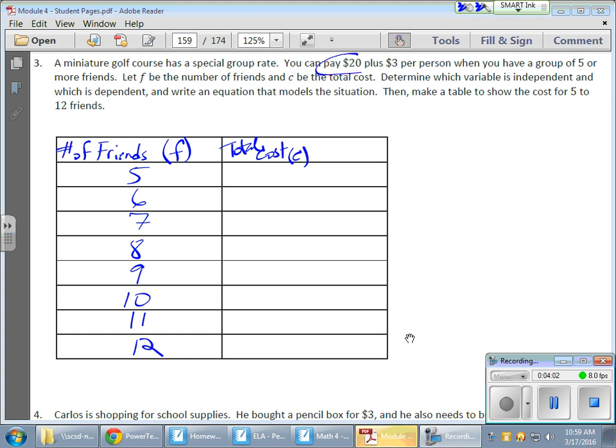I need a formula here, and my formula will be derived from this part. I can pay $20 plus $3 per person. Now, that $20 is a fixed rate, which means no matter how many friends I have between five and 12, I'm going to be spending that 20 bucks. But it is going to be an additional $3 per person. Now, that per person is a multiplication deal. So that cost, and here's how it's going to work.